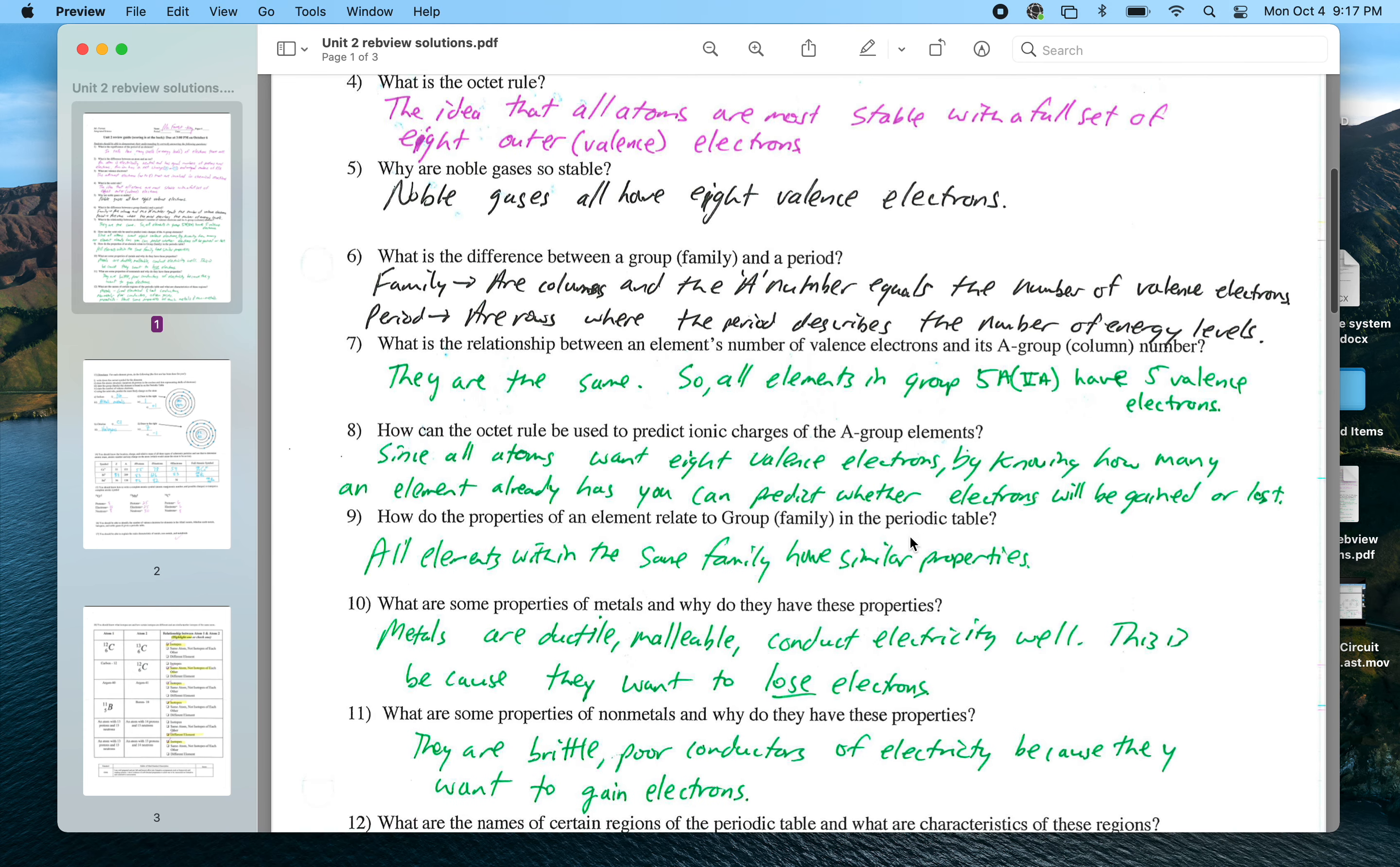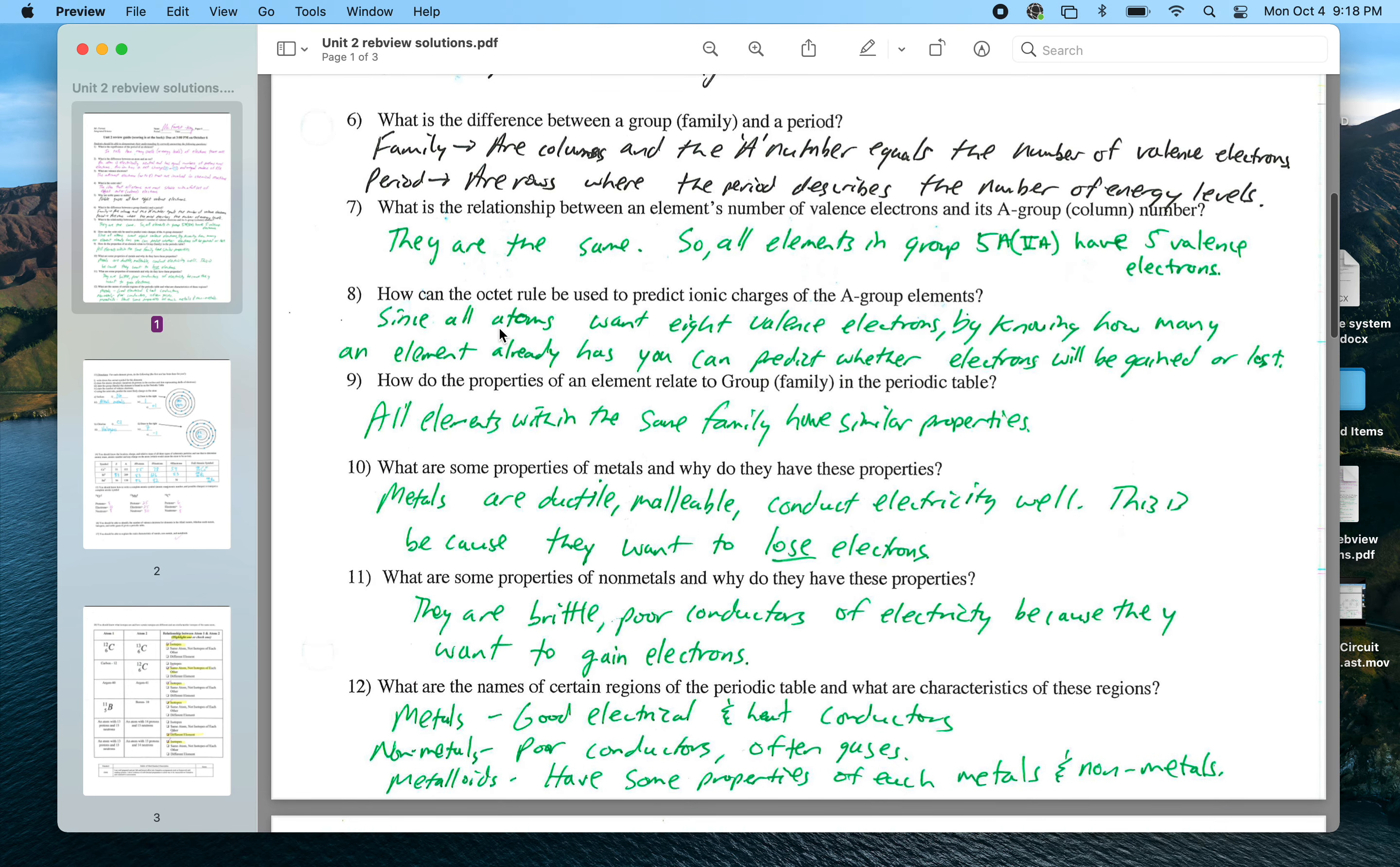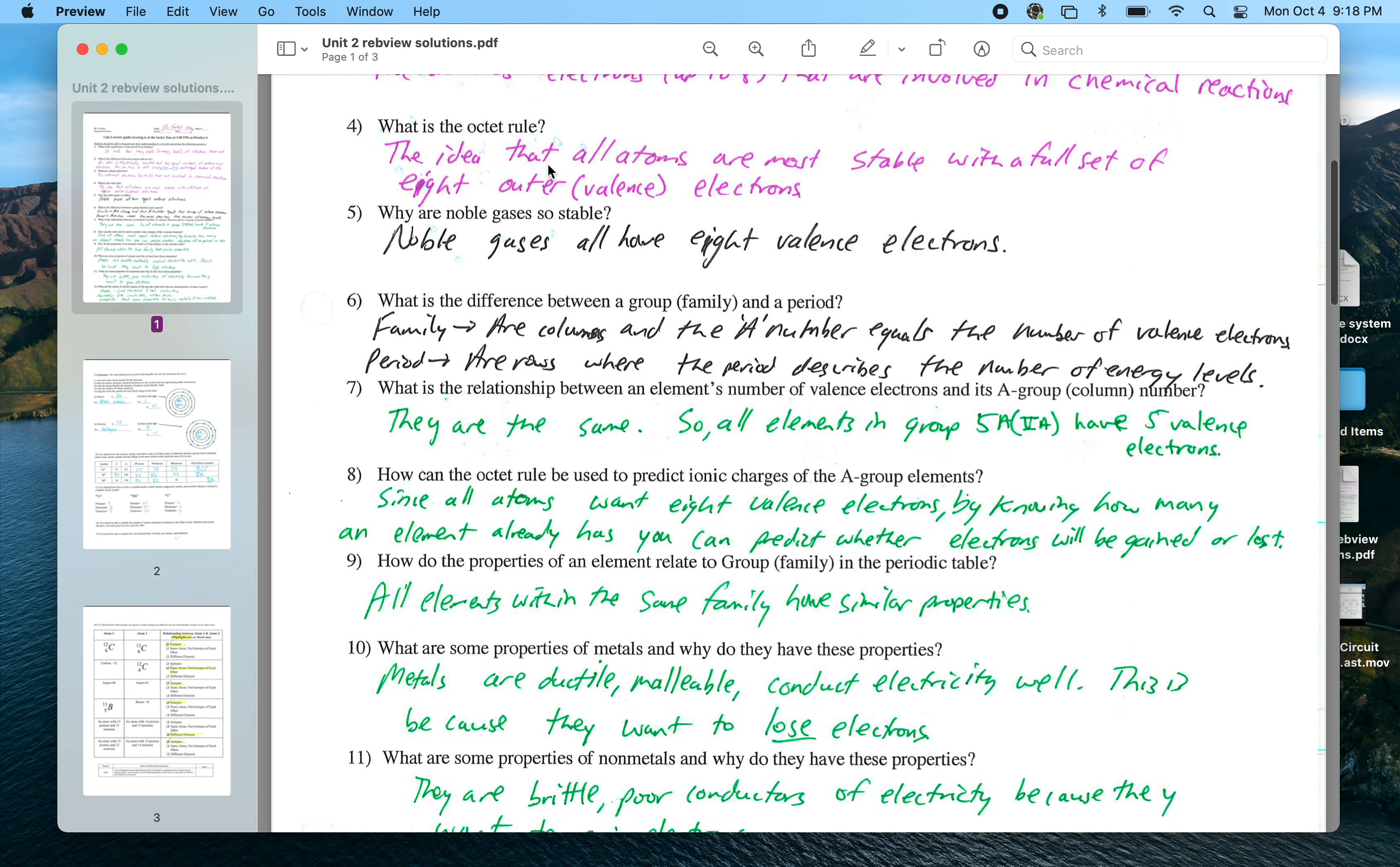How can the octet rule be used to predict the ionic charges? Well, since atoms are stable with eight valence electrons and they don't all naturally have that - they have one, two, three, four, five, six, seven, or eight - other than those noble gases, they want to try to get to eight. By knowing the A group, which represents the number of valence electrons, and understanding that atoms all want to get to eight, I can predict whether they would gain or lose electrons to get to that stable value of eight outer or valence electrons.